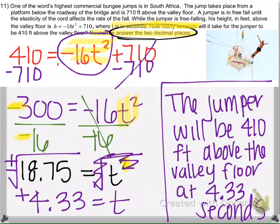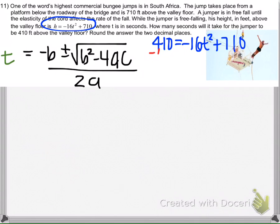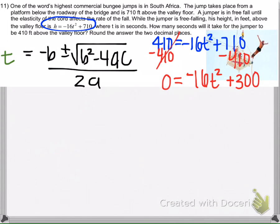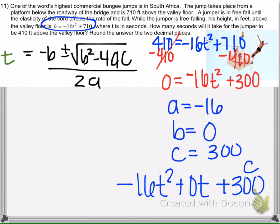I'm going to do this problem a second time to model it using the quadratic formula. Since this equation only has one variable term, the square root property was easier — but I can use the quadratic formula too; the equation just needs to equal zero first. If I use the quadratic formula, A is negative 16, B is 0 because there is no T term, and C is 300. Think of C for constant — that's the C value.